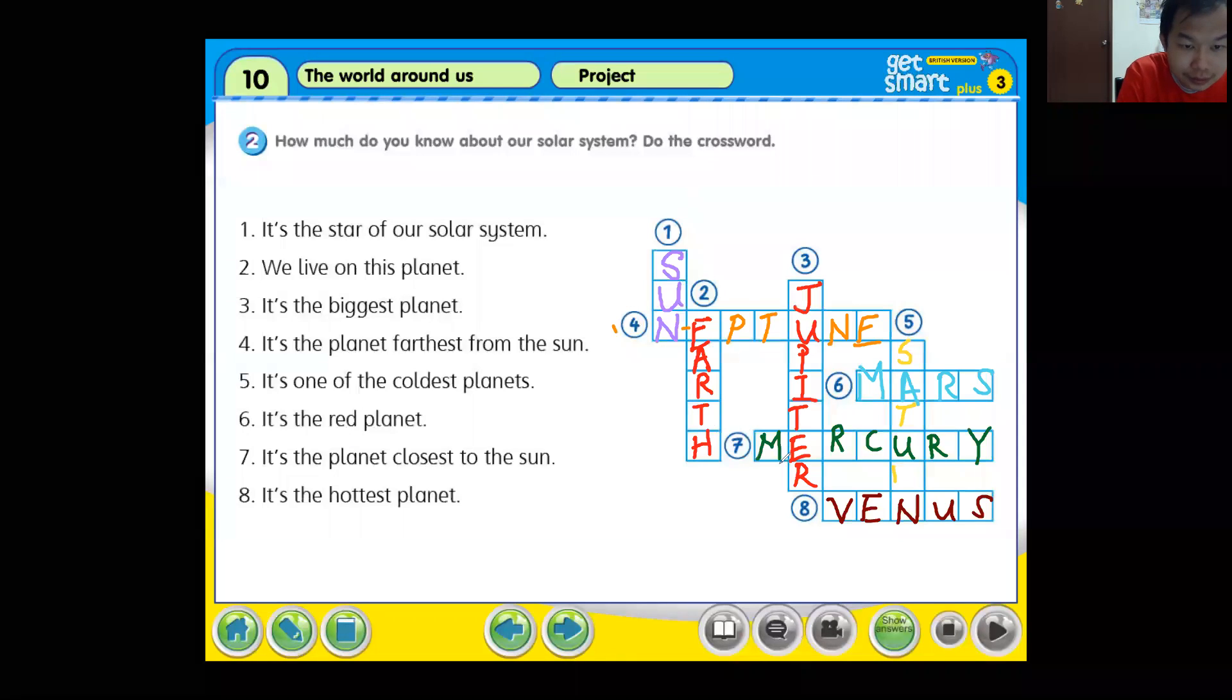Let us check again. It is the star of our solar system is the Sun. We live on this planet, we live on Earth. It is the biggest planet, is Jupiter. The planet furthest from the sun should be Neptune. One of the coldest planets, so we have Neptune, Uranus and Saturn, so now we put Saturn. Is the red planet, Mars. Is the planet closest to the sun, Mercury. Is the hottest planet, Venus. Boys and girls, you manage to complete this task along with me. I hope you like this work and find it easy for you, and I hope you know more about our solar system.